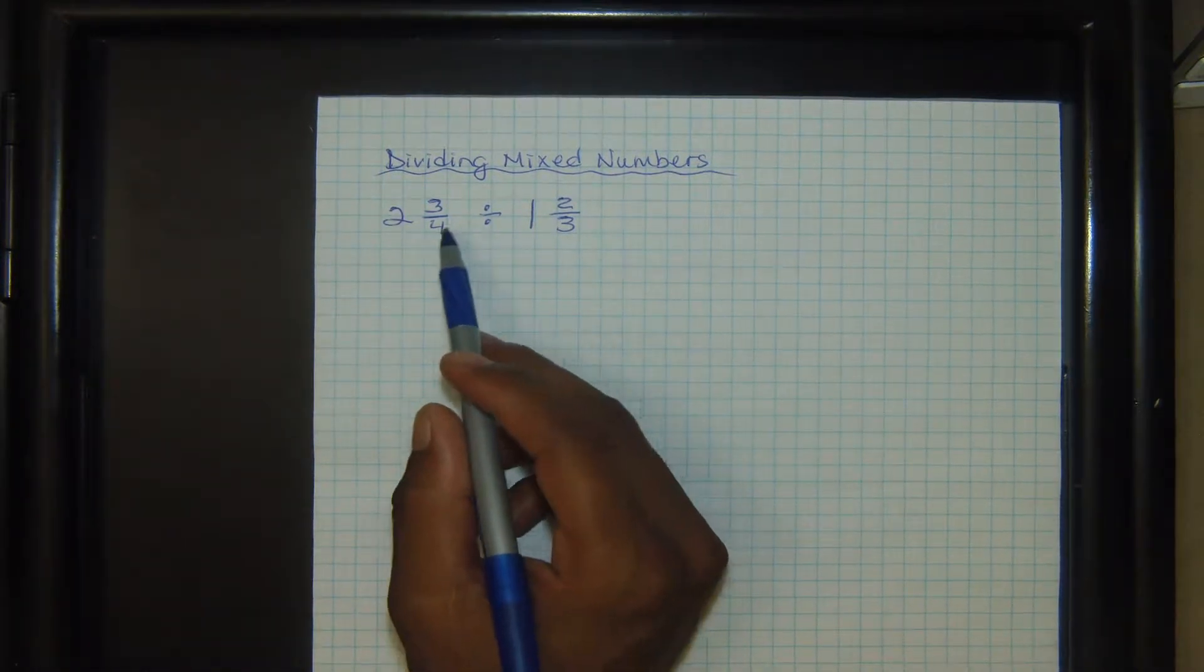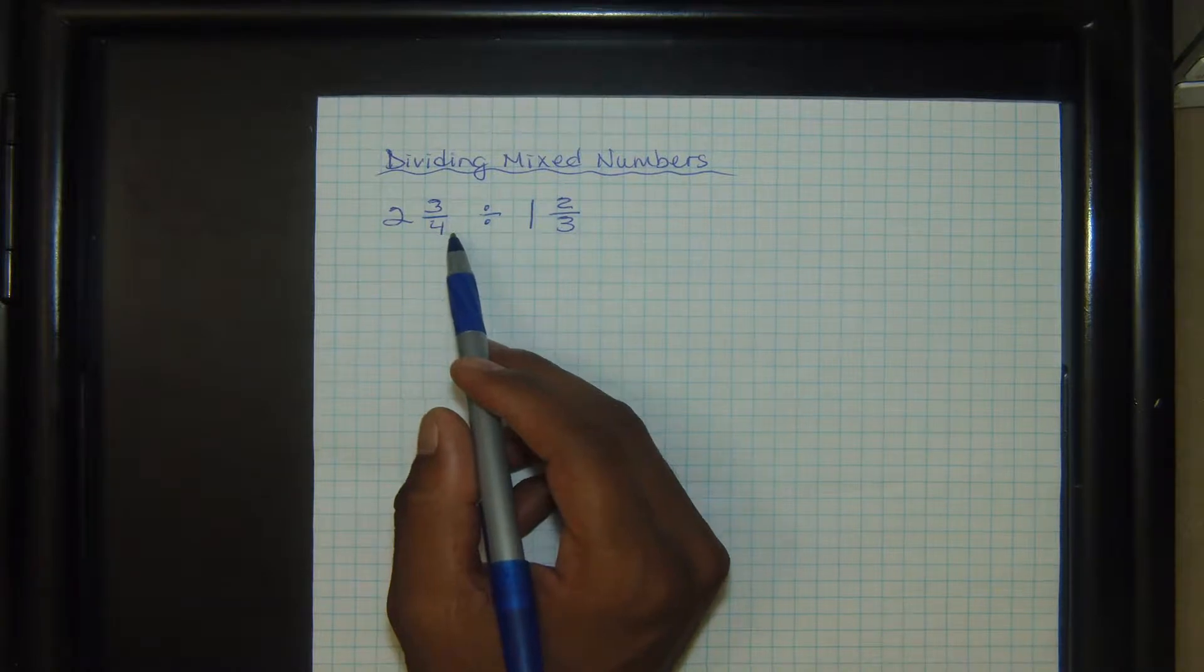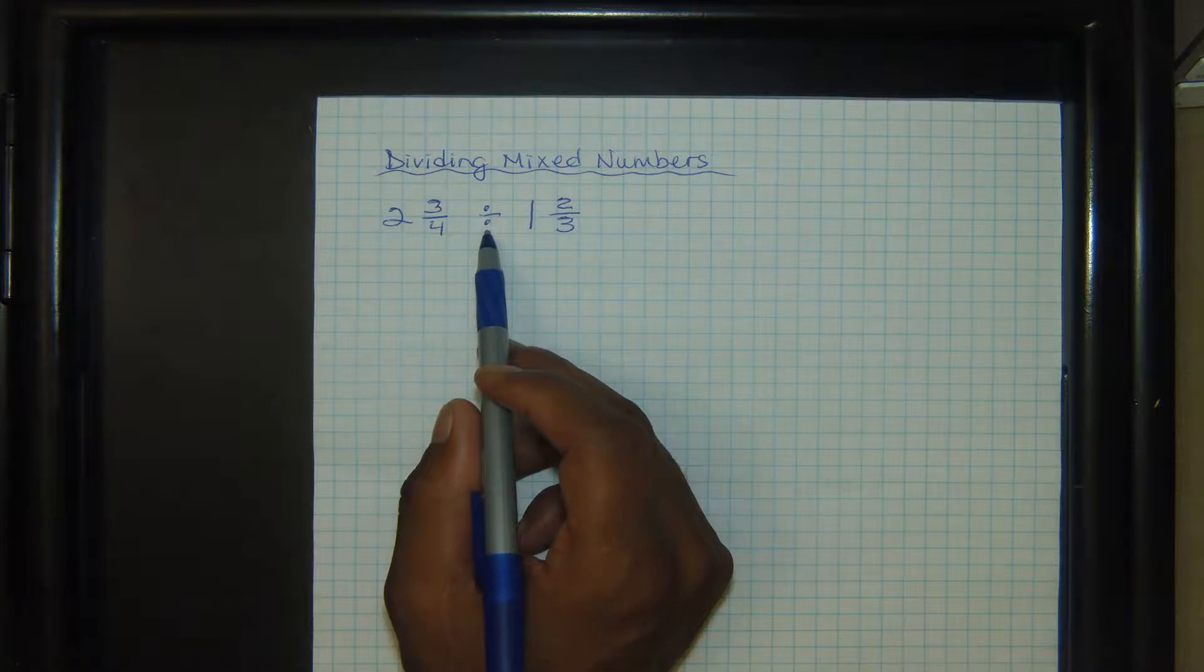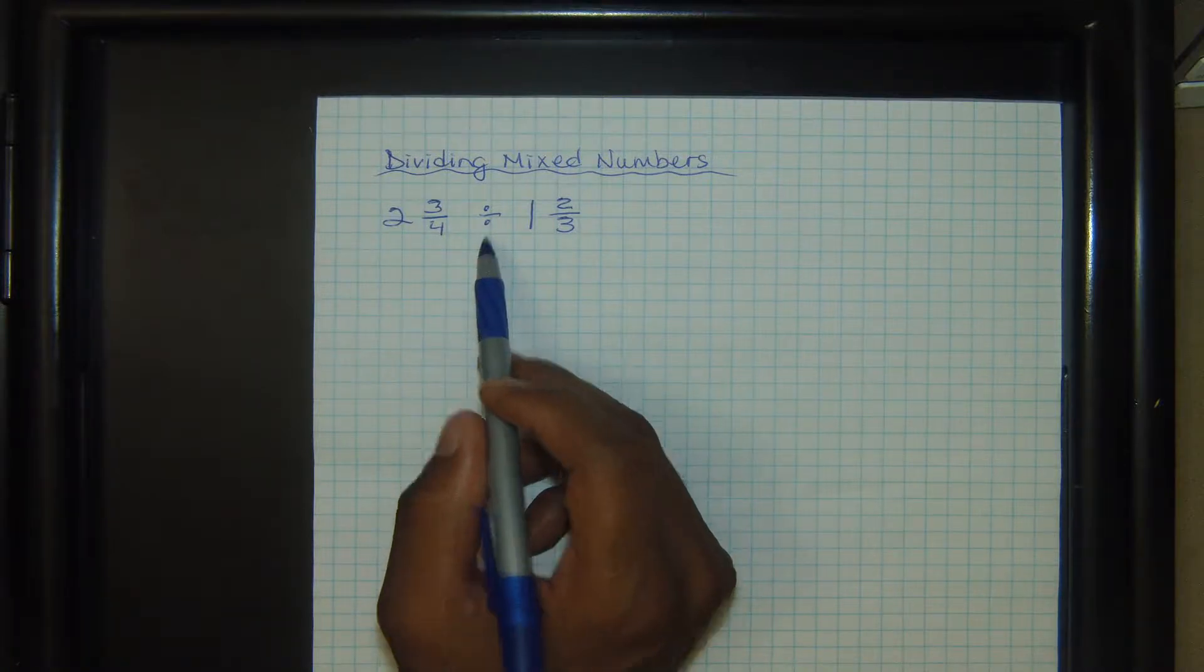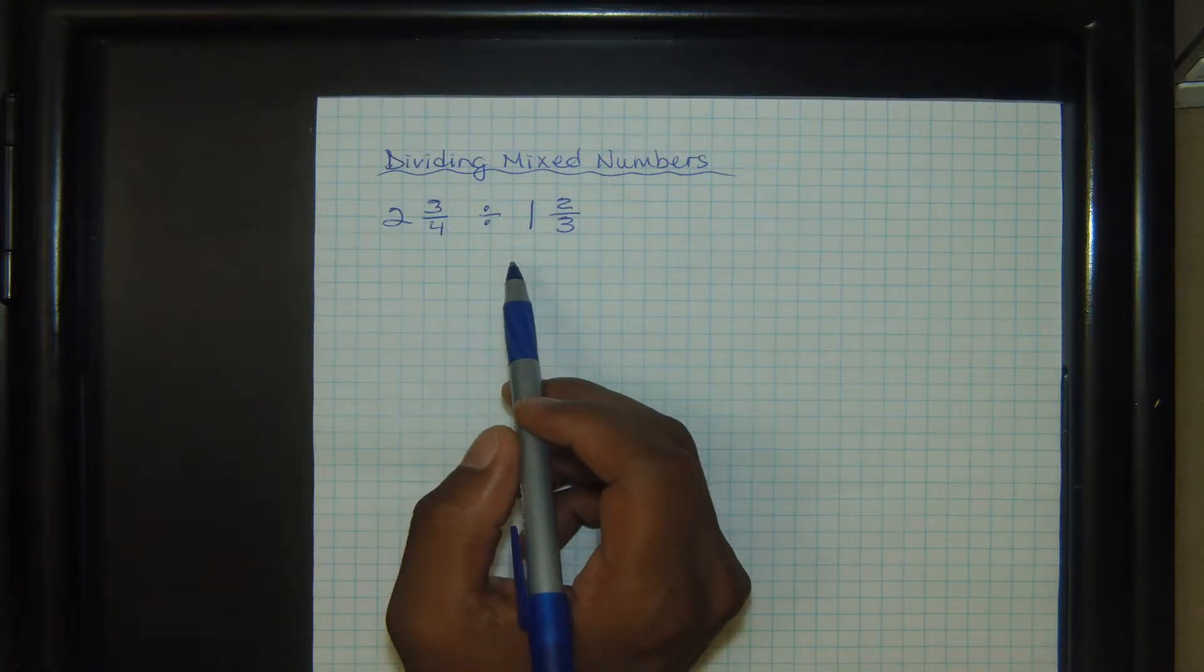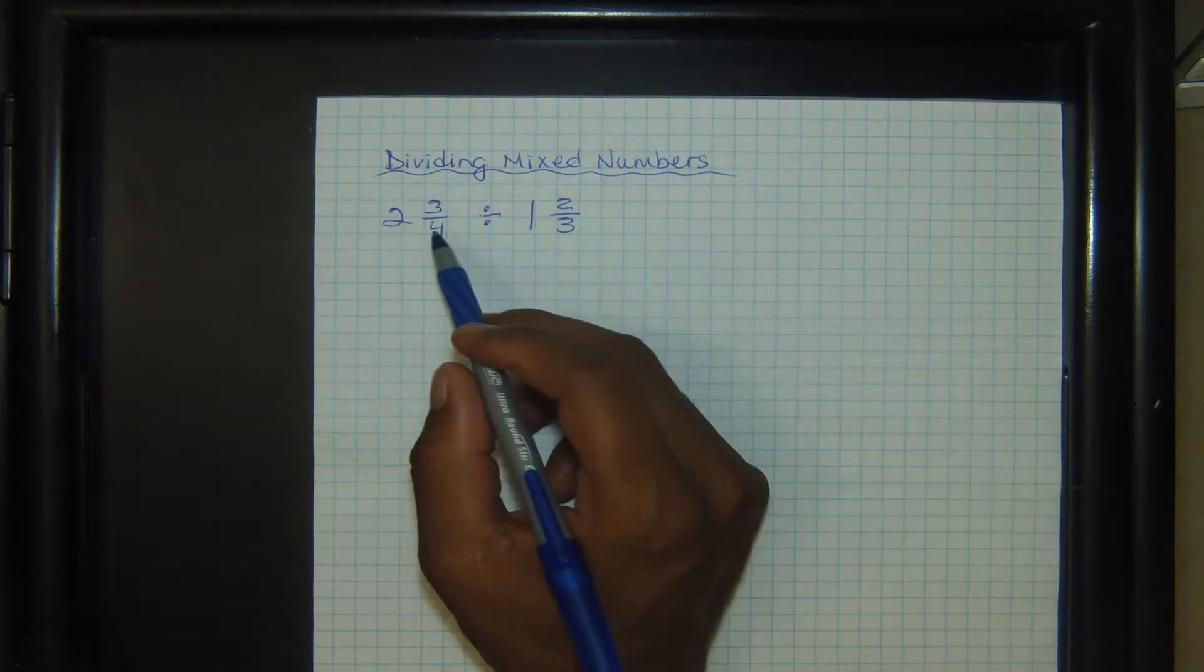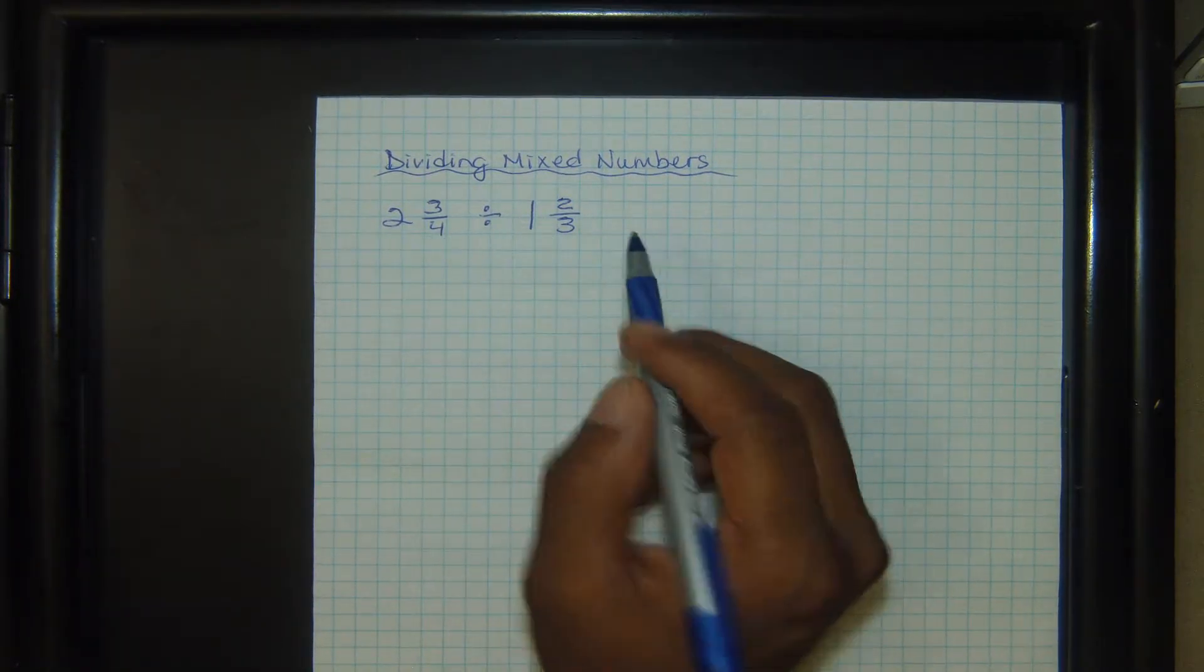Mixed numbers are just forms of fractions, so the top two things to do are: we're going to change the division to multiplication, and we're going to flip the second fraction. But before we can do any of that, we need to change both of these mixed numbers to improper fractions.